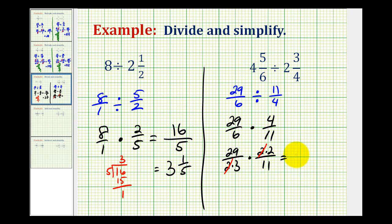And now we can multiply knowing that our product will be in simplest form. 29 times 2 is equal to 58, and 3 times 11 is equal to 33.